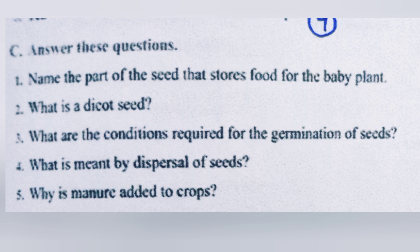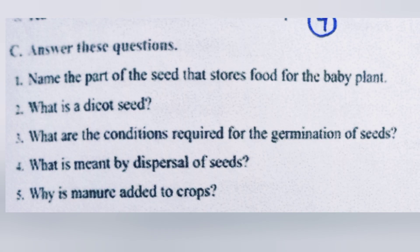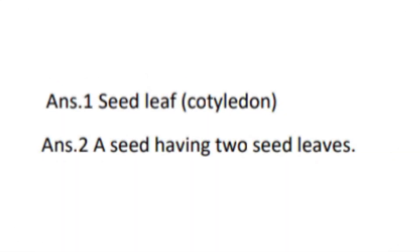Now Part C: answer these questions. First question: name the part of the seed that stores food for the baby plant. Answer: seed leaf, or we can also say cotyledon. Second question: what is a dicot seed? Answer: a seed having two seed leaves.